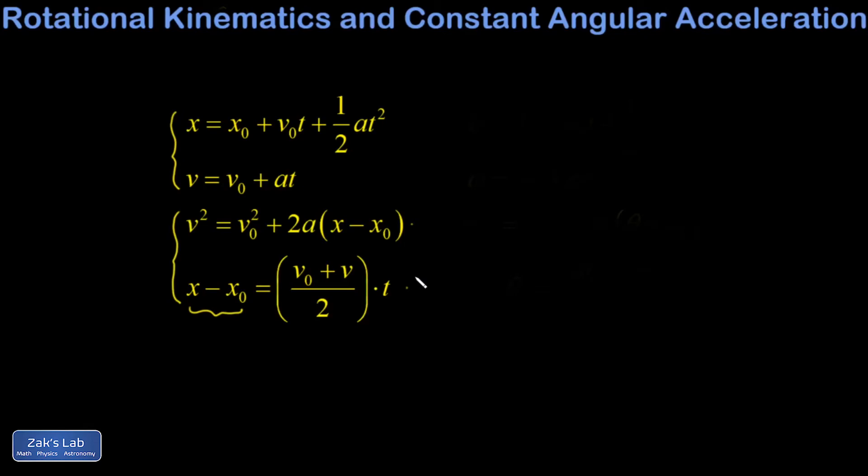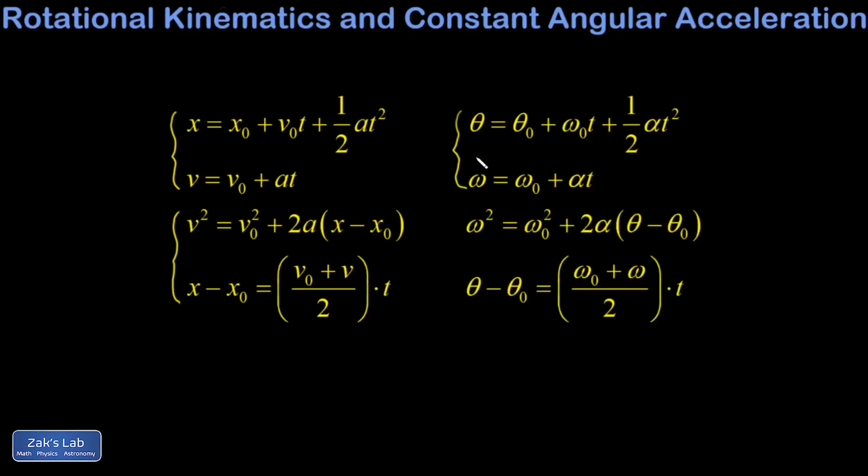All right. Because the derivative relationships are exactly the same for theta, omega, and alpha, all the same equations drop out of the math. And I get a set of equations that looks like this. Again, the first two, those come directly from applying calculus to the derivative relationships between these kinematic variables. The second two come from algebraic manipulations of the first two, which can save you a little bit of time depending on what you're given in a problem.